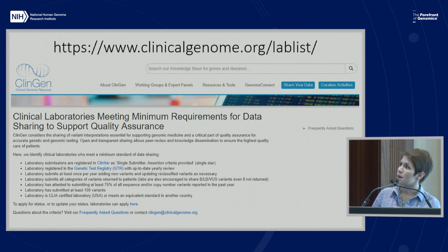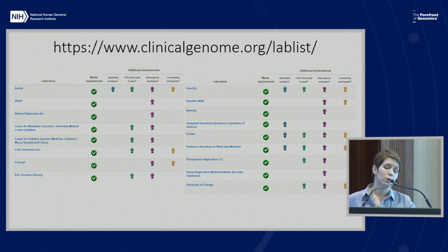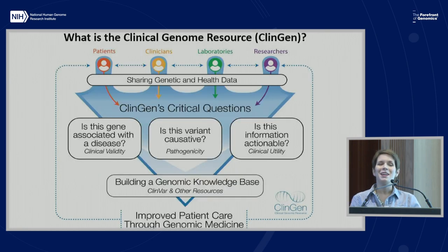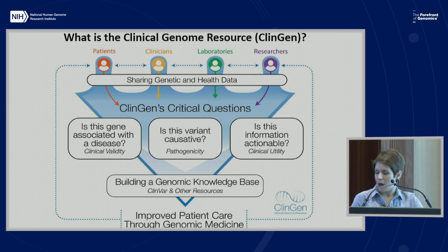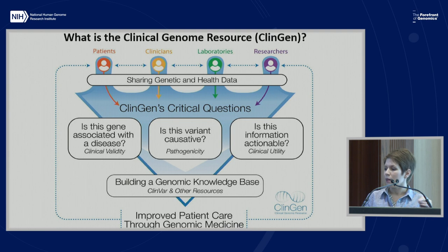This slide shows some criteria that ClinGen has put forth as a measure of quality, and a number of laboratories have actually worked to uphold those standards, including some of the most proficient ClinVar submitters to date. Now that I've introduced ClinGen a little bit, I'll step back and walk you through exactly what we are. The Clinical Genome Resource, or ClinGen, is an NIH-funded effort to identify clinically relevant genes and variants for use in precision medicine and research. In a nutshell, the way we do this is by encouraging our different stakeholder groups — which includes patients, clinicians, laboratories, and researchers — to share their genetic and health data.